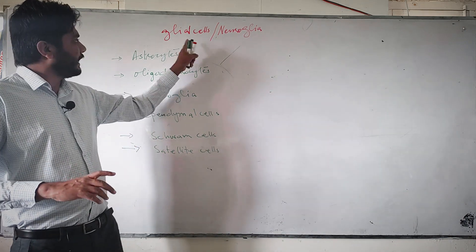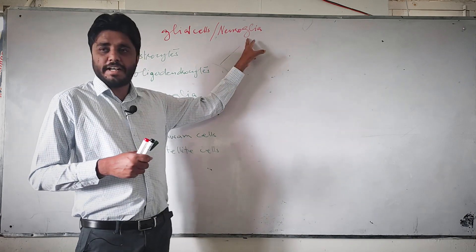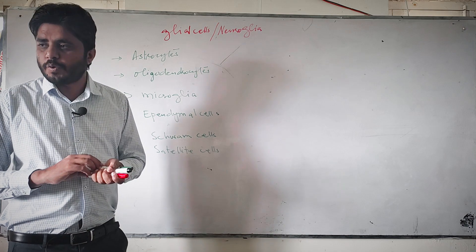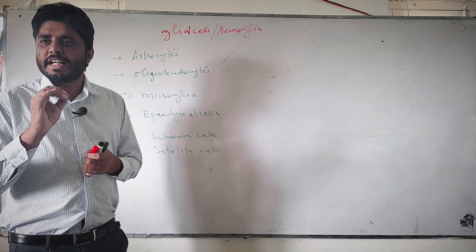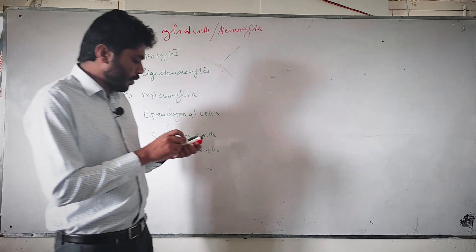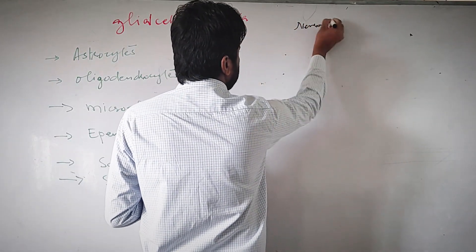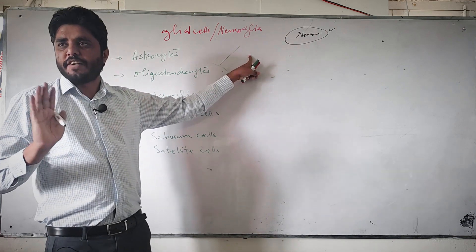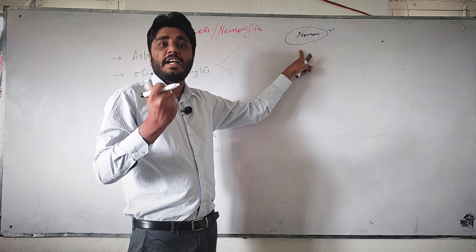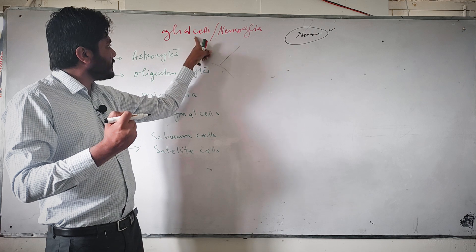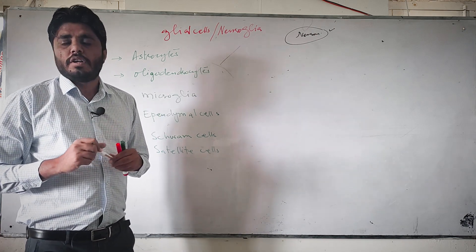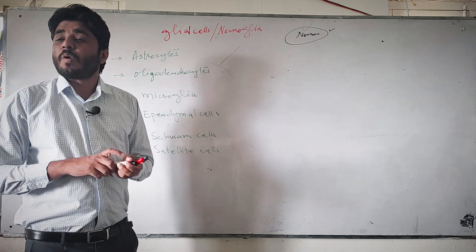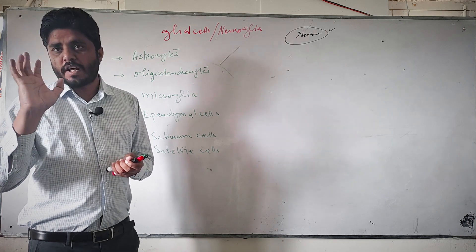Today we are going to discuss glial cells, which are also called neuroglia. Your nervous tissue consists of two different types of cells which are functionally and structurally entirely different from each other. Number one is neurons, and the other cell type is glial cells or neuroglia cells. Neurons are excitable cells that can conduct nerve impulses, while glial cells are considered the supportive tissue of the nervous system, providing physical and physiological support.